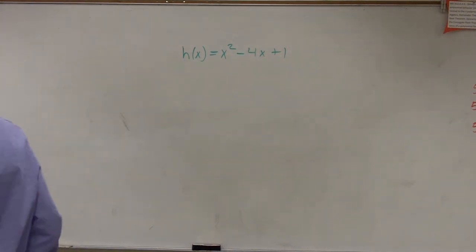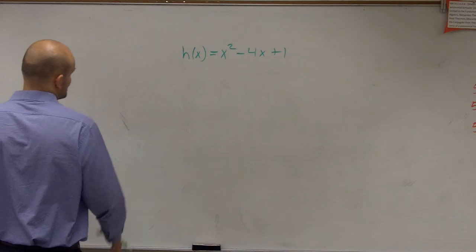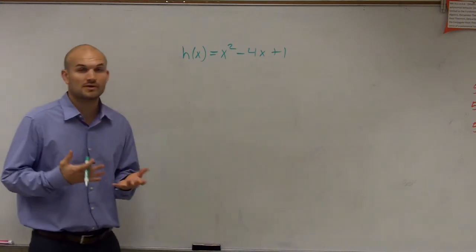So for this problem, what it's asking us to do, it says h of x equals x squared minus 4x plus 1.